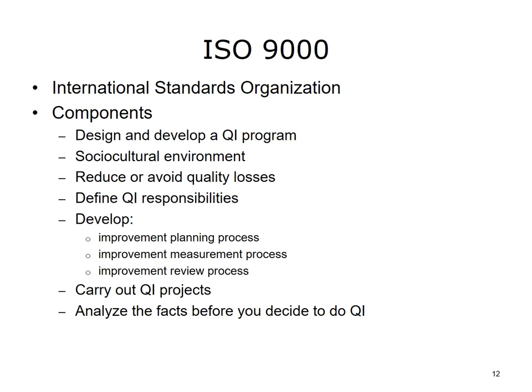The International Standards Organization, in 1987, introduced the initial ISO 9000 Guidelines for Performance Improvement. Components include: design and develop a QI program; create a socio-cultural environment and structure that supports improvement; reduce or avoid quality losses; define QI responsibilities; develop an improvement planning process; develop an improvement measurement process; develop an improvement review process; carry out QI projects; and analyze the facts before deciding to do QI.